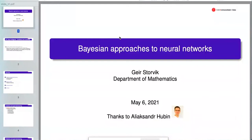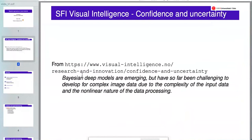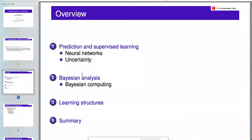Thanks for the invitation to give this talk. I'm a statistician and I've been working with Bayesian approaches for a long time, but more recently in relation to neural networks and machine learning, in particular in connection with my former PhD students. Congratulations on this new center — it's fantastic that you've achieved this. I find it particularly interesting that you are focusing quite a lot on Bayesian approaches, but also on the many challenges related to this, which I will also touch upon in this talk.